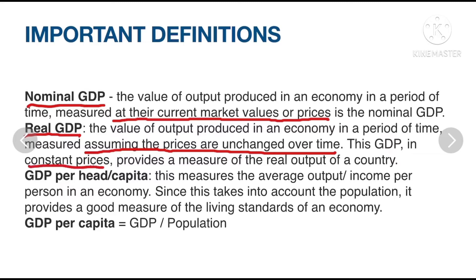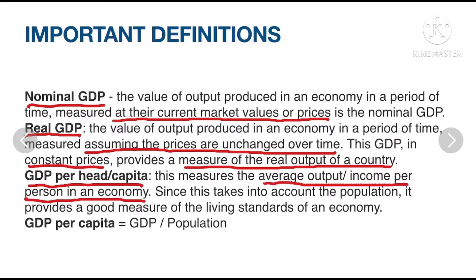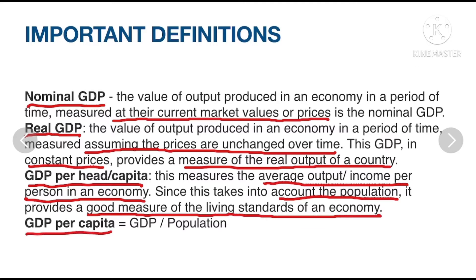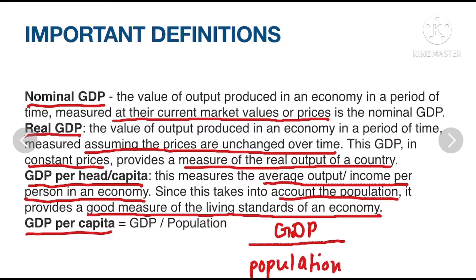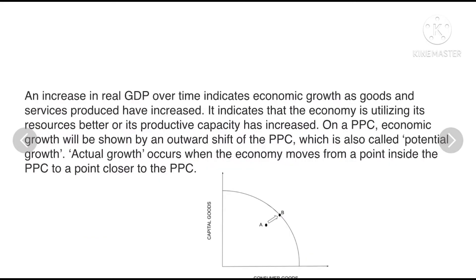GDP per head or per capita is the measure of the average output or income per person in an economy. It takes into account the population and provides a good measure of the living standards of an economy. To calculate GDP per capita, use the formula: GDP divided by population.